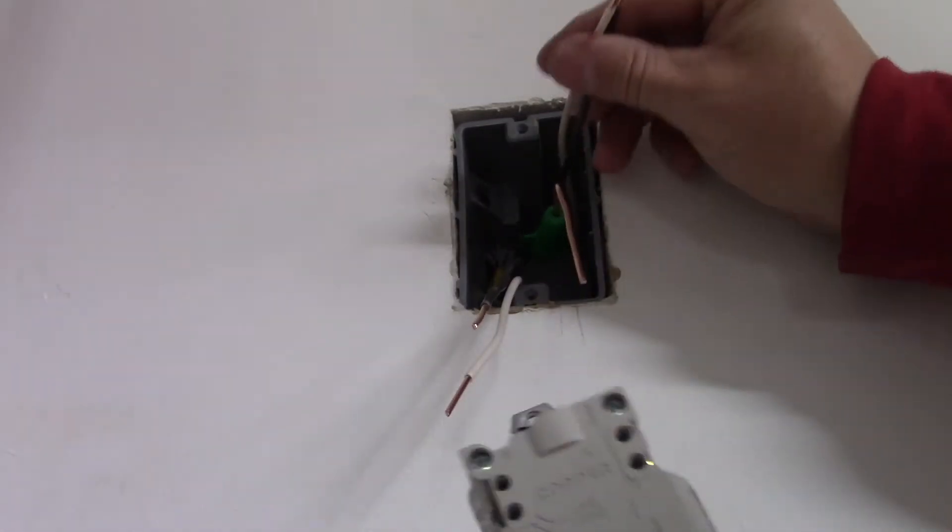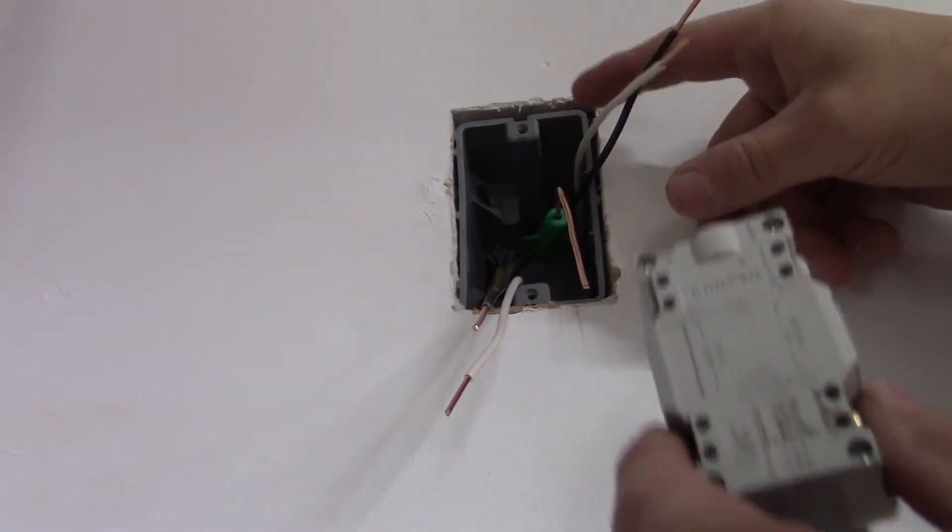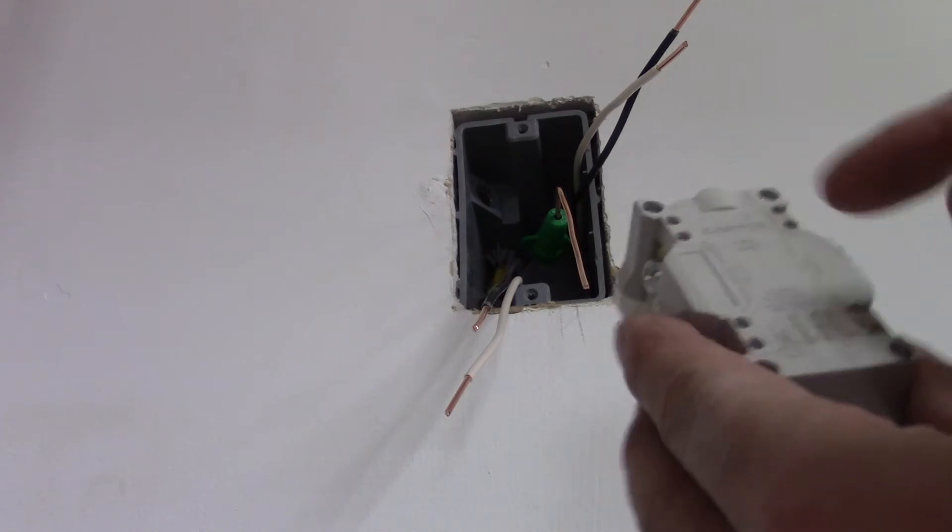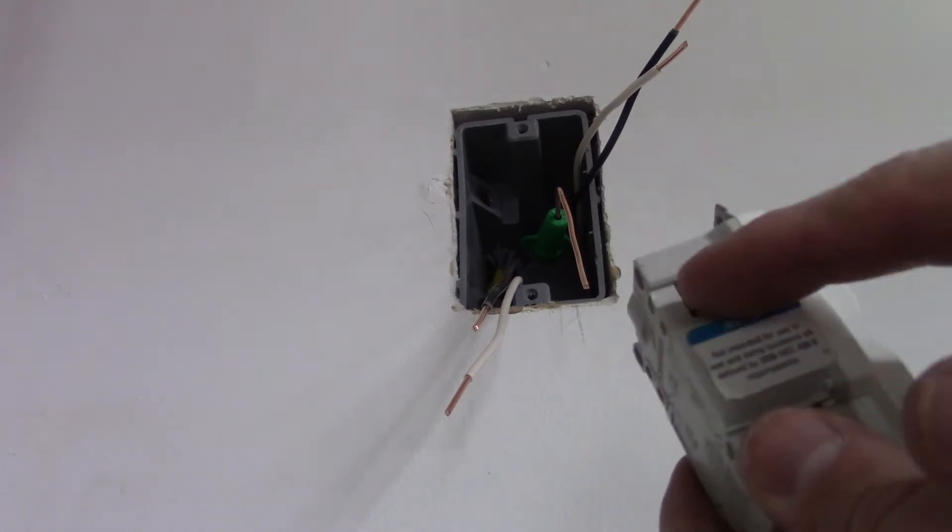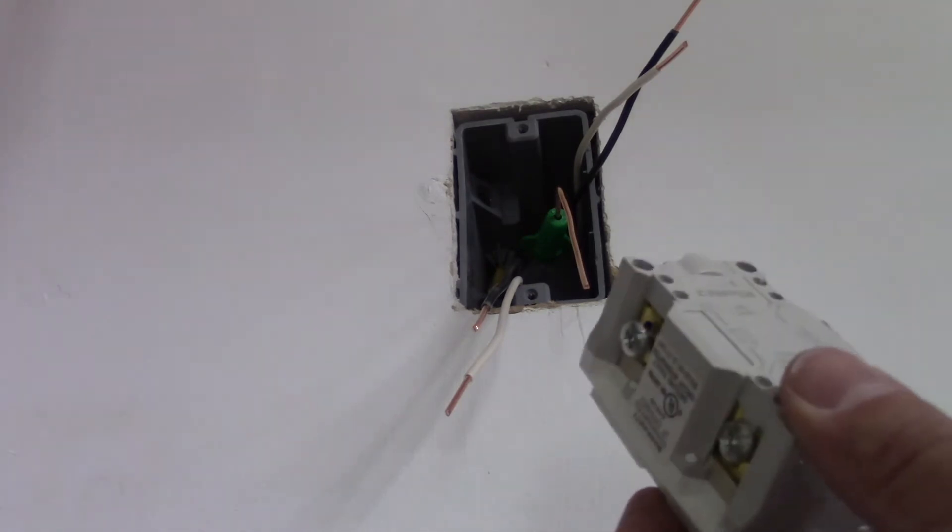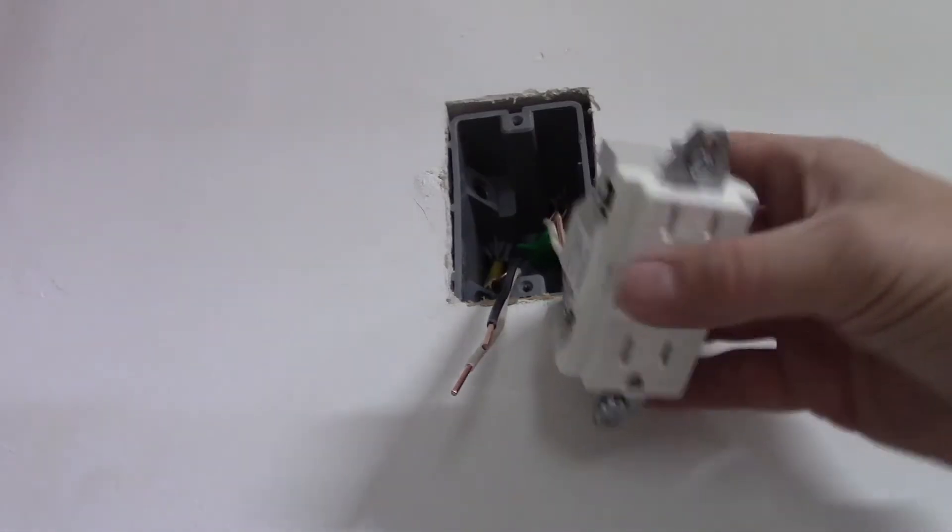The ground wire is going to slide right along this channel and go behind this metal plate here. And when I tighten the green screw, that's going to hold the ground wire. I'm going to take these two wires on this side that are coming from the panel and hook them up to the line at the top of the outlet. The black wire is going to go to the gold terminal and the white wire is going to go to the silver terminal. Okay, so now my line side is connected.